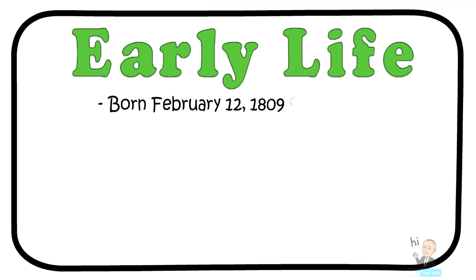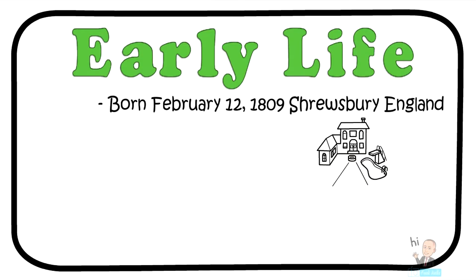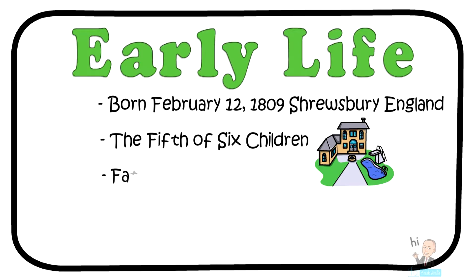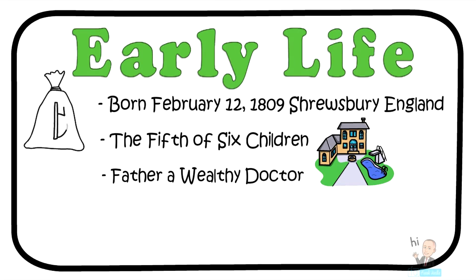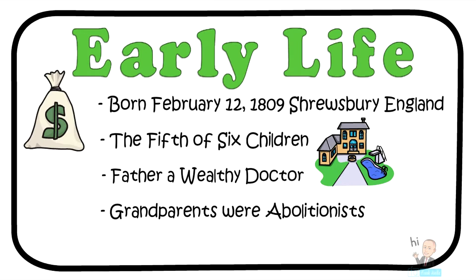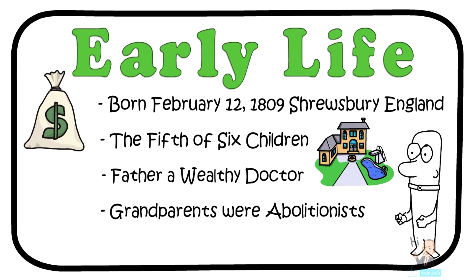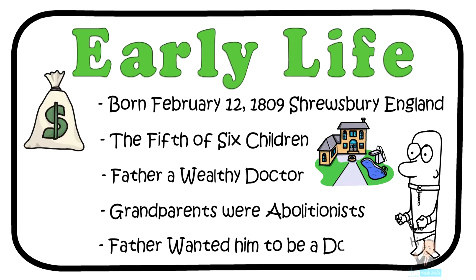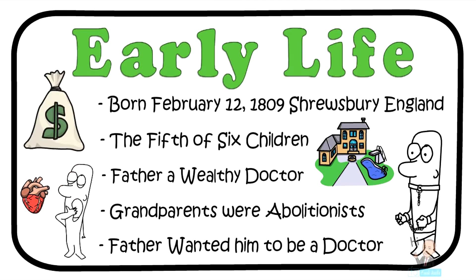Charles Darwin was born on February 12, 1809 in Shrewsbury, England, in his family home called the Mount House. Charles was the fifth of six children. His father was a wealthy doctor, and Charles Darwin grew up with a life of privilege. His grandparents were abolitionists — individuals who staunchly opposed the institution of slavery. When Charles was younger, his parents pushed him into the medical field. However, Charles hated the sight of blood and found medical school to be extremely boring, which led him to take up biology and geology.